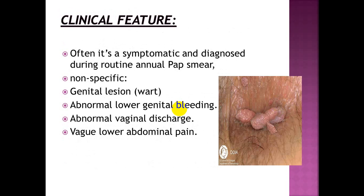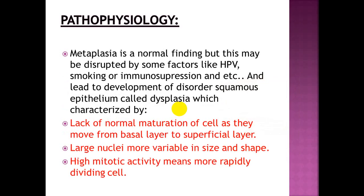Clinical features of CIN: it is often asymptomatic and undiagnosed during routine annual Pap smear. Non-specific symptoms include genital lesions like warts, abnormal lower genital bleeding, abnormal vaginal discharge, and vague lower abdominal pain. Metaplasia is a normal finding but may be disrupted by factors such as human papillomavirus, smoking, or immunosuppression.